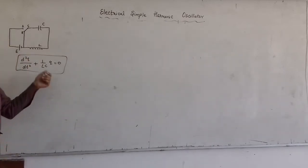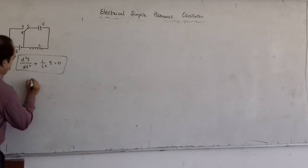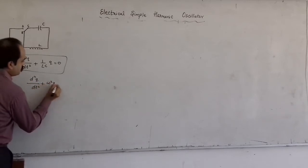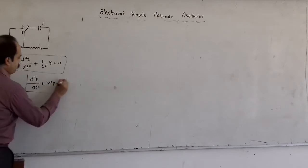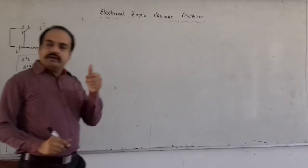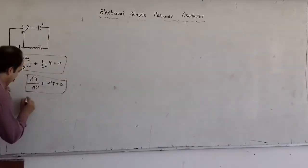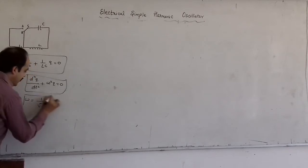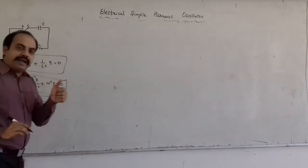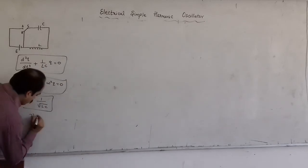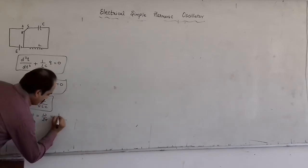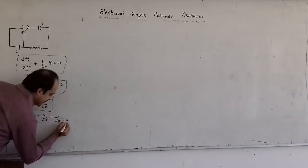We replaced 1/LC by ω², and wrote d²q/dt² + ω²q = 0. We also wrote an expression for the angular frequency: ω = 1/√(LC). The linear frequency was given by ν = ω/2π, which came out to be 1/(2π√(LC)).